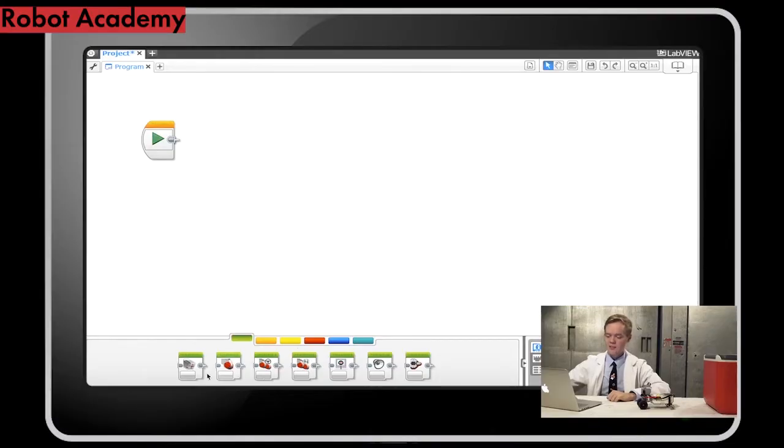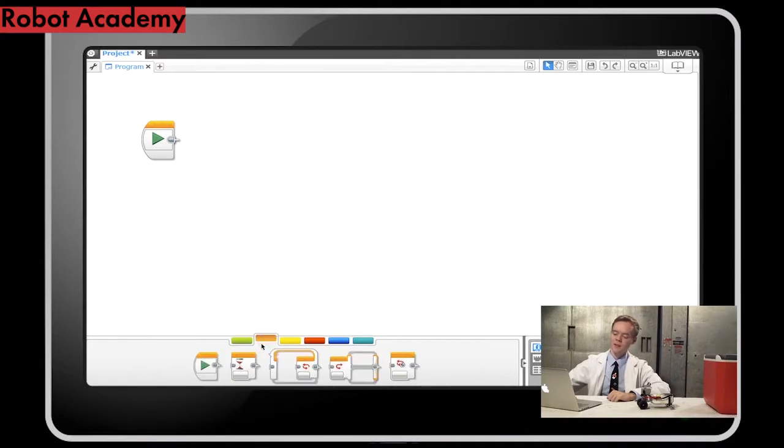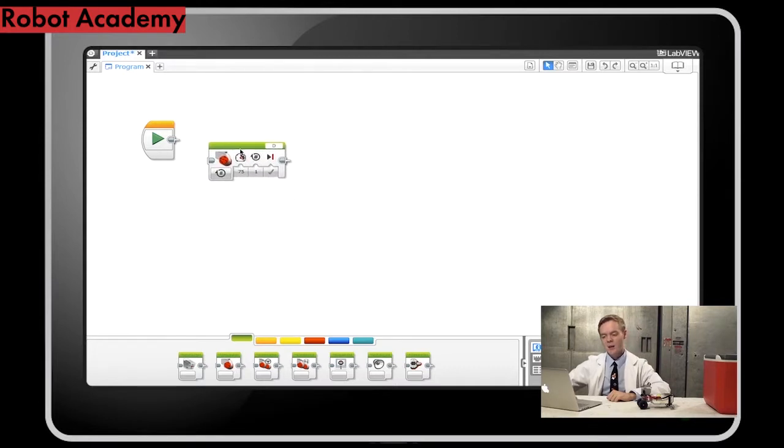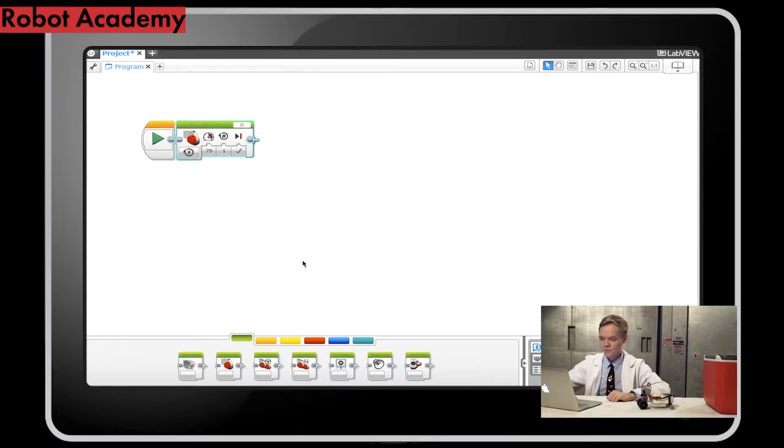Each of these blocks is a specific type of command. So this block, for example, is going to tell the robot to turn on one of its motors. And I can give the robot this command by placing it right here to the right of the play block. Next, I'll give the robot a second block.